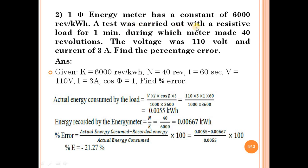A test was carried out with a resistive load for one minute, so time T = 60 seconds. During which the meter made 40 revolutions, so N = 40. The voltage was 110 volt and current was 3 ampere. Power factor is assumed to be 1. We need to find the percentage error. Given: K = 6000 rev/kWh, N = 40, T = 60 seconds, V = 110 volt, I = 3 ampere.